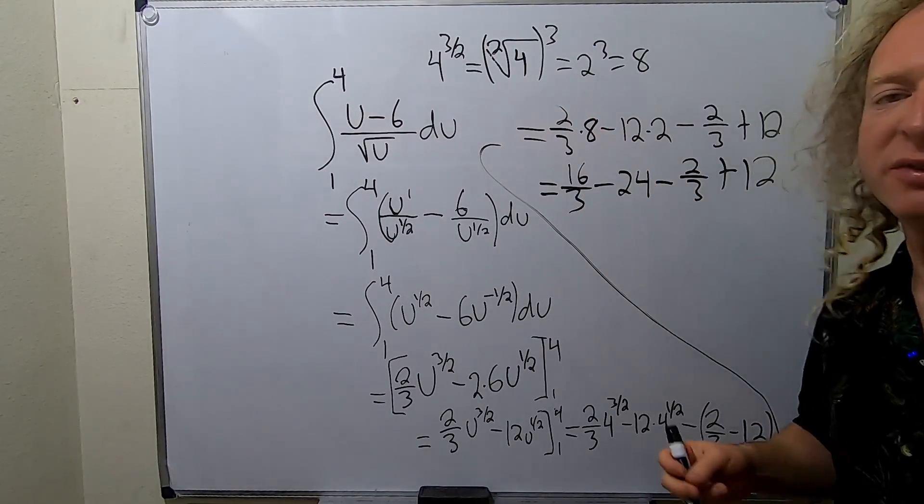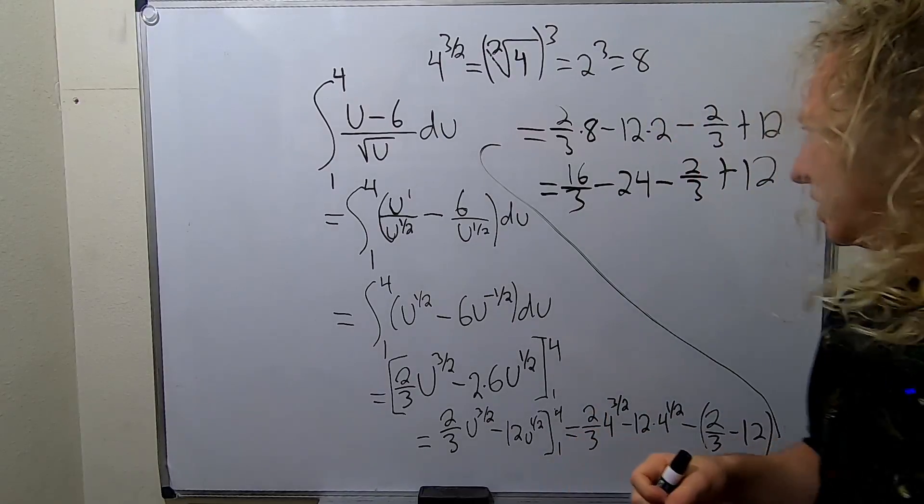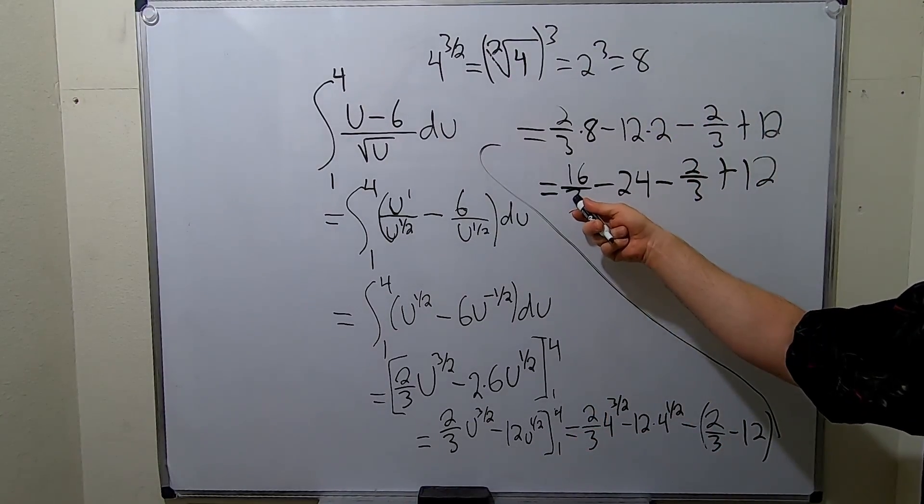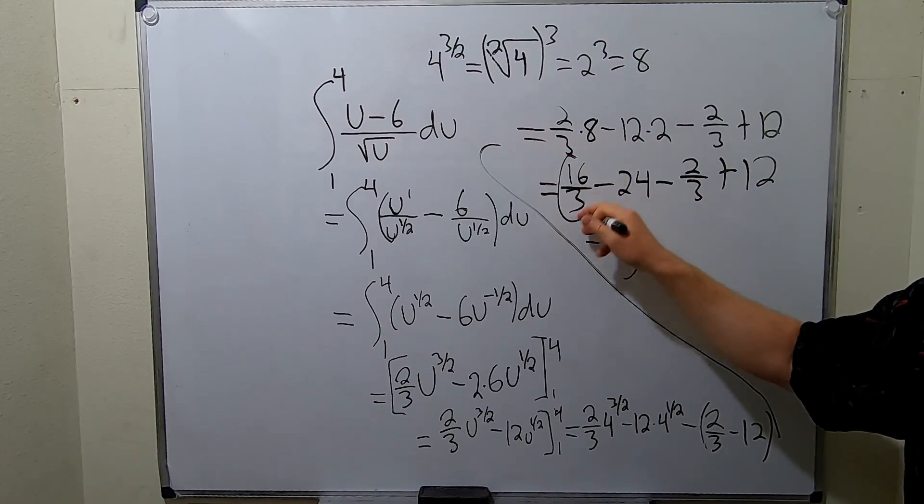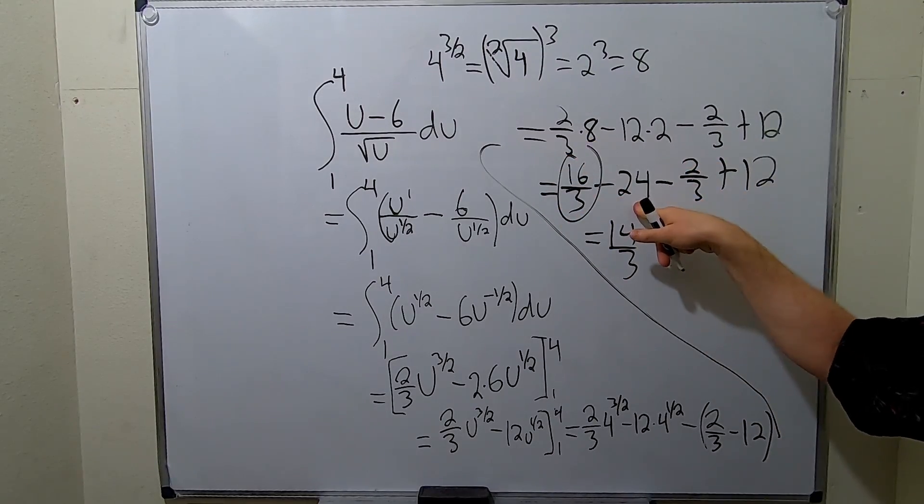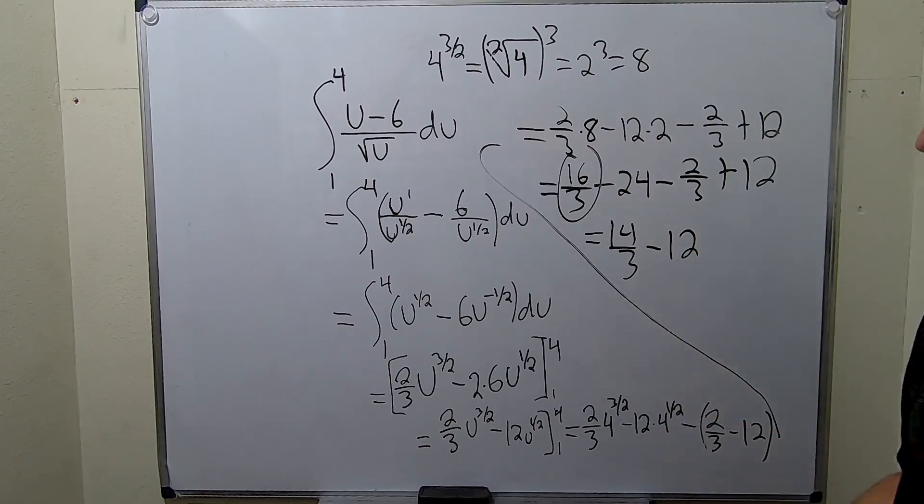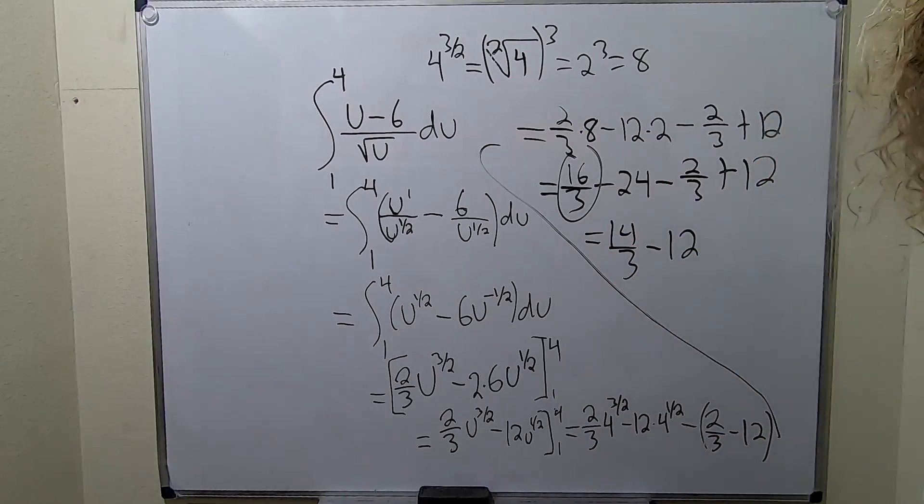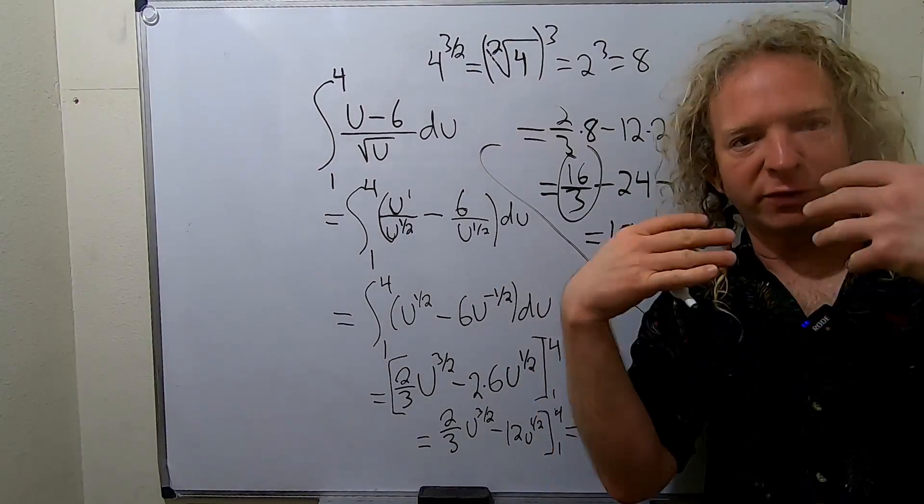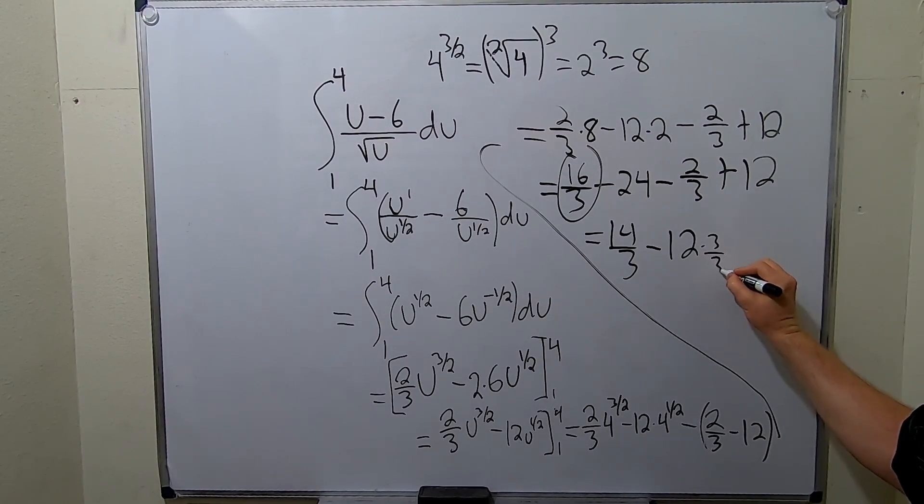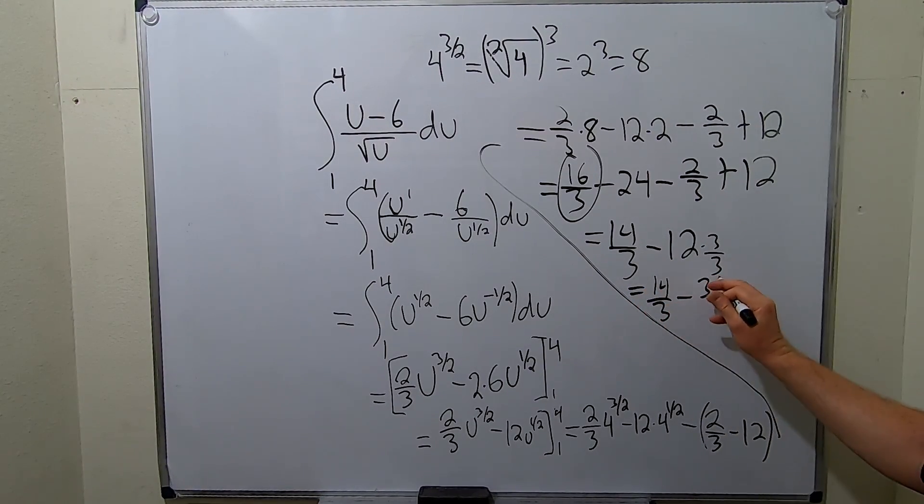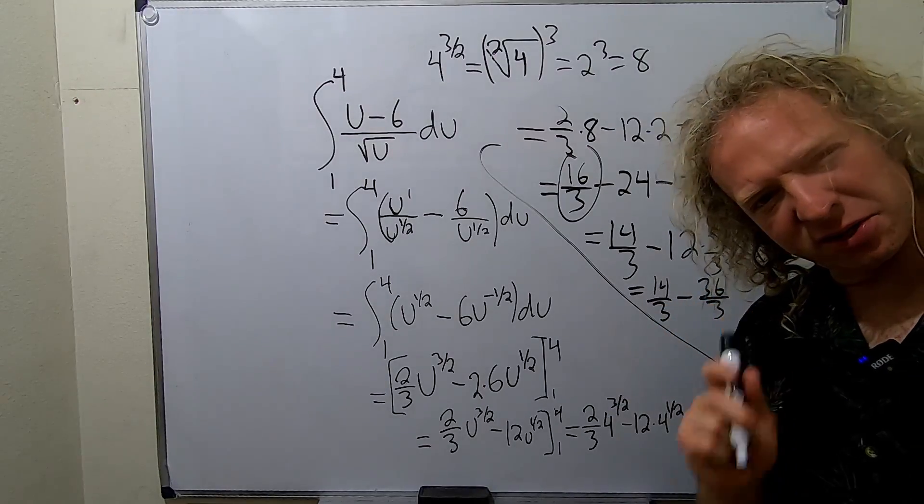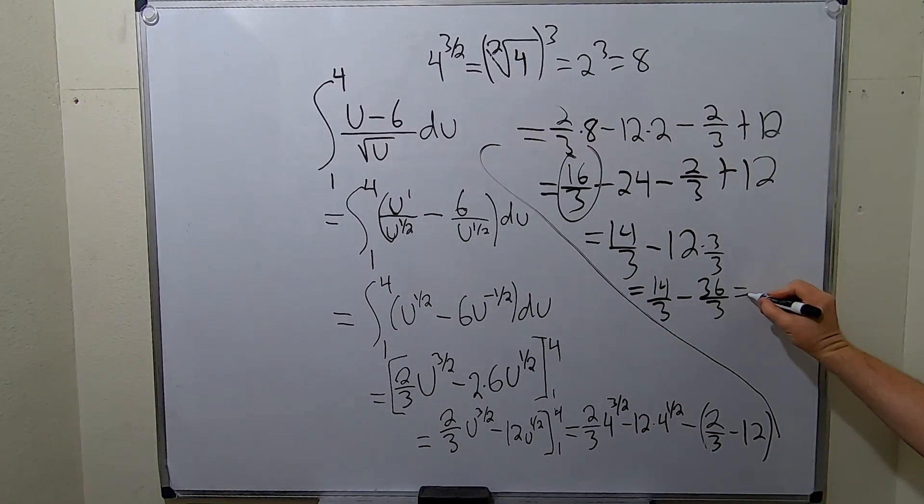Let's see, 16 thirds minus 2 thirds is 14 thirds. That's combining this one and this one. Negative 24 plus 12 is minus 12. To finish this computation, we want to write 12 as a number over 3, so we can multiply it by 3 over 3. So this is 14 thirds minus 36 thirds. 14 minus 36 is negative 22 thirds. Yeah, that's right. Yeah, because 36 minus 14 is 22.